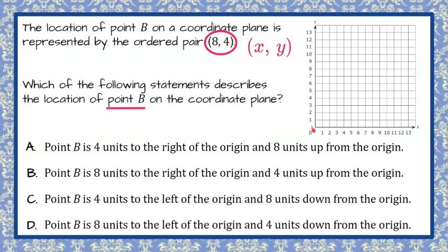So when we go to graph an ordered pair, we always start at the origin point here. And we read an ordered pair like we read a book from left to right, or you could think about it in alphabetical order. We're going to start with our x-coordinate 8.